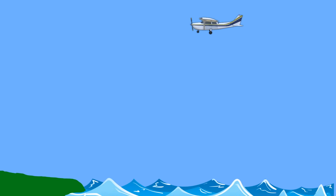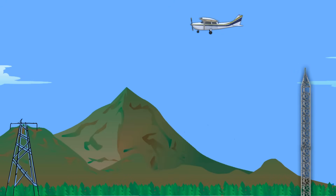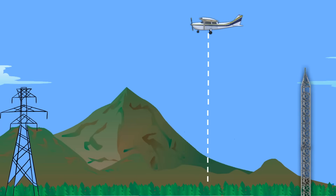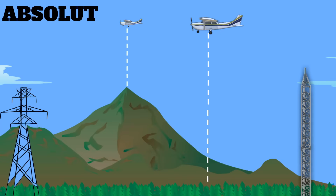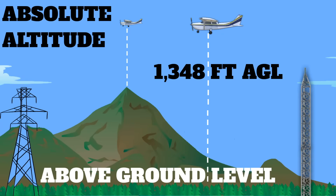Next, we have absolute altitude. Absolute altitude is our vertical distance above the surface. Keep in mind, when we're talking about the surface, this could be anything from water, open fields, mountaintops, or whatever. We're not talking about buildings, towers, or any other man-made objects — this is your vertical distance above God's green earth. This is important to remember because the surface can change a lot: hills and mountains, valleys and canyons, all kinds of stuff. But your vertical distance above these surfaces is your absolute altitude. Anytime you see the letters AGL after an altitude, this stands for above ground level, which is an absolute altitude.